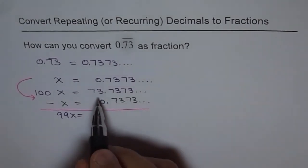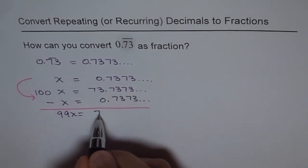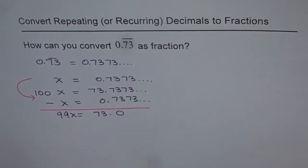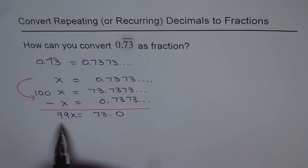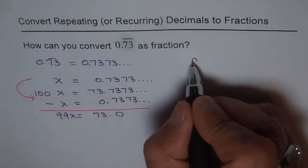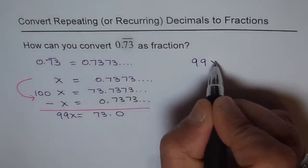And that equals 73 minus 0 is 73. All these numbers cancel out, 73.0. And now we can find what x is. You know how - divide by 99. Look here, now we got 99x equals 73.0.